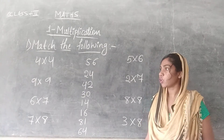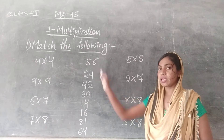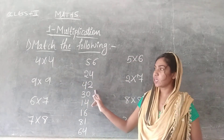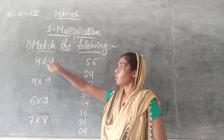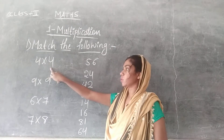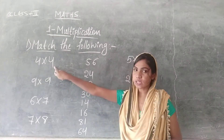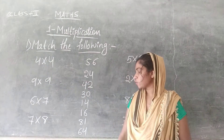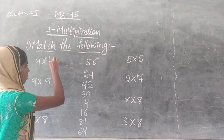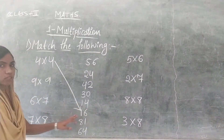Here we have multiplication. In the middle we have the number. Multiply and match to the number. The first one is 4 into 4. Read the 4 times table up to 4: 4 4s are 16. So match for the number 16. 4 into 4 is 16.